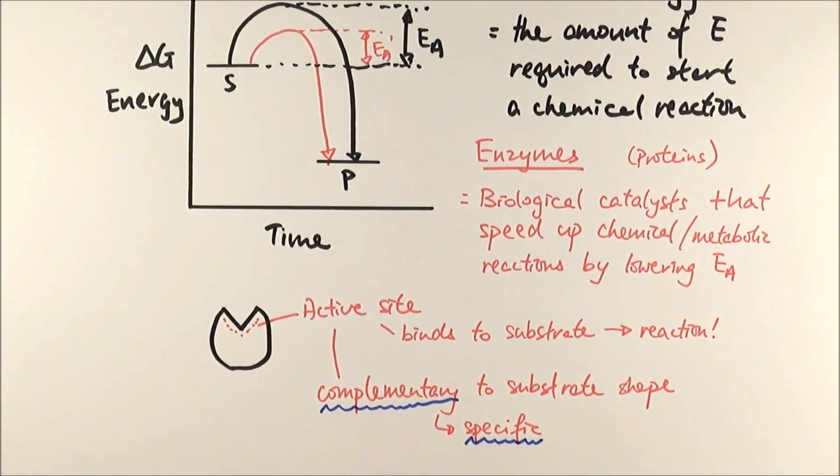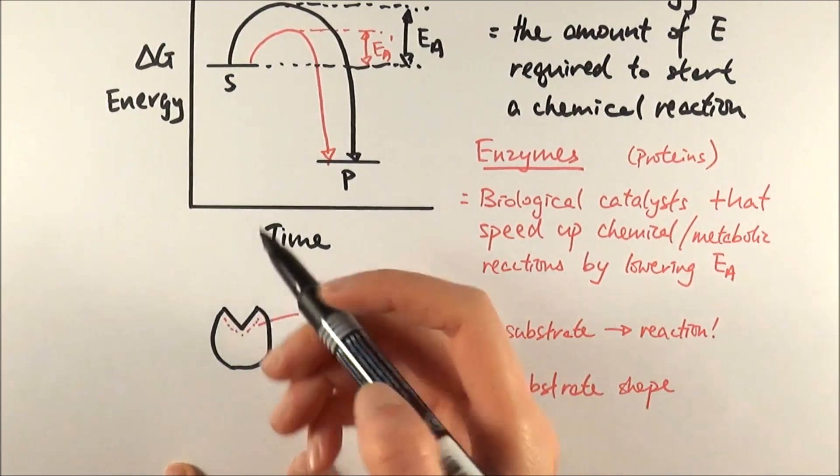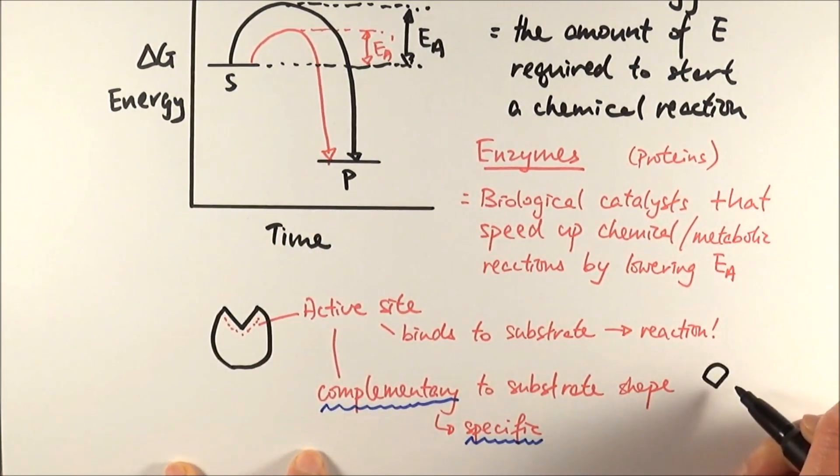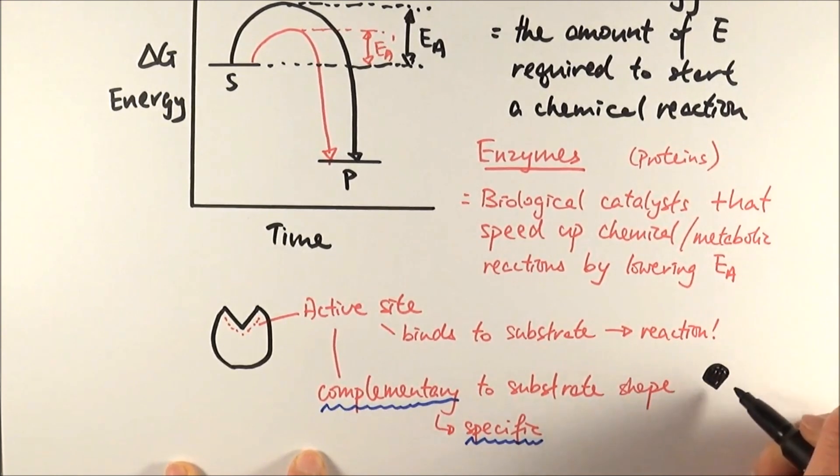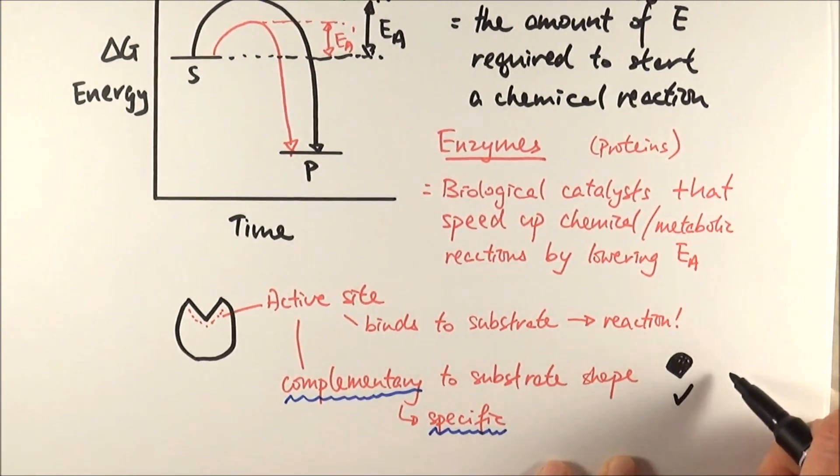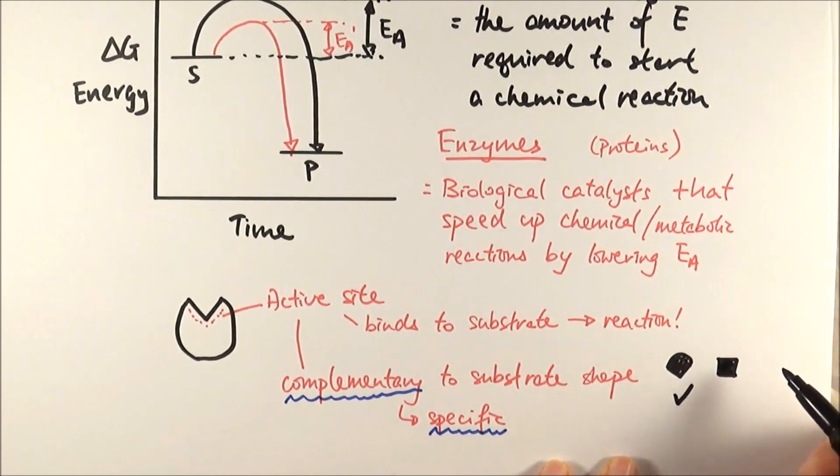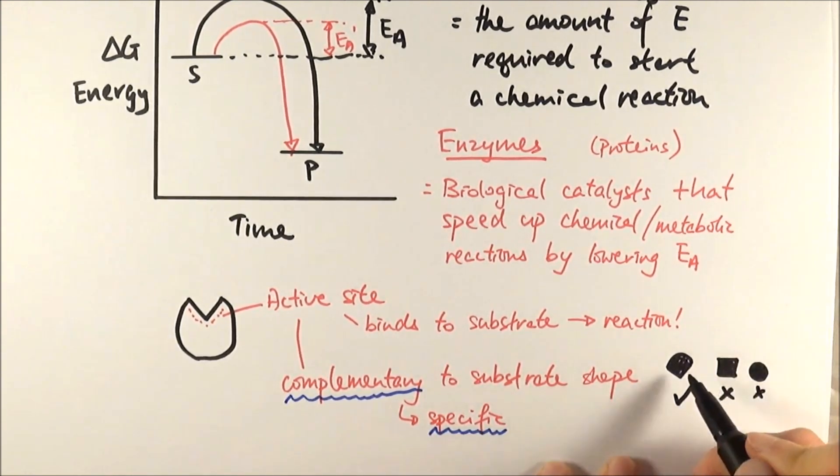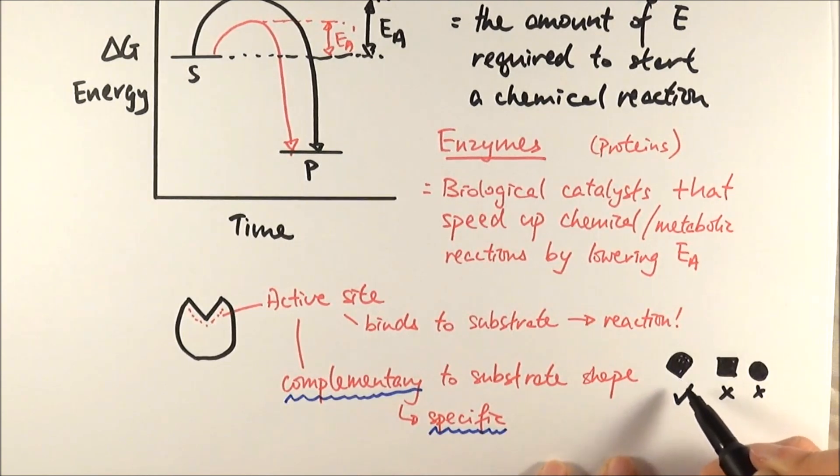What we mean by that is this particular enzyme here can only fit a substrate that has that particular shape. For example, it will fit a substrate that looks like that, because it has that particular angle there. However, it will not fit into a substrate that looks like that, because it doesn't have quite the same shape. So it's very specific, it can only fit one thing.